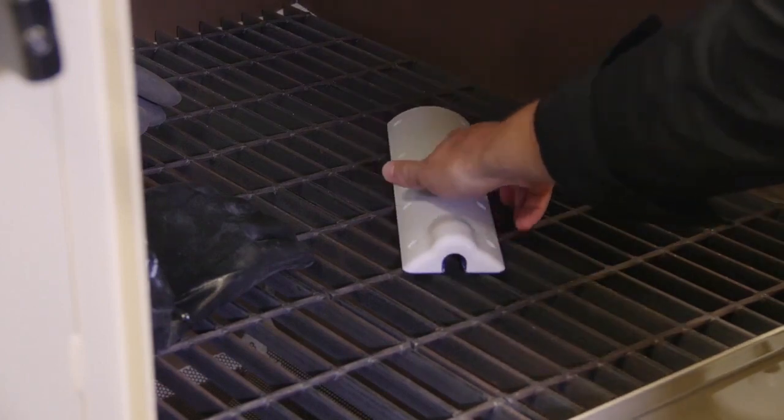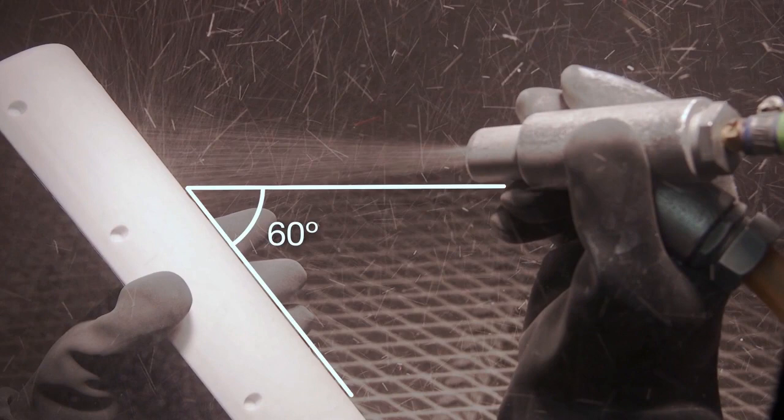Now, media blast the part. Place the part in the blasting chamber. Position the spray gun at a 60 degree angle to the part surface.